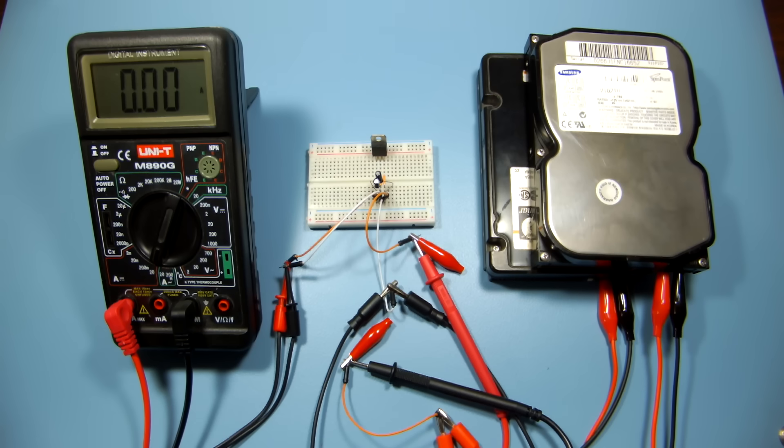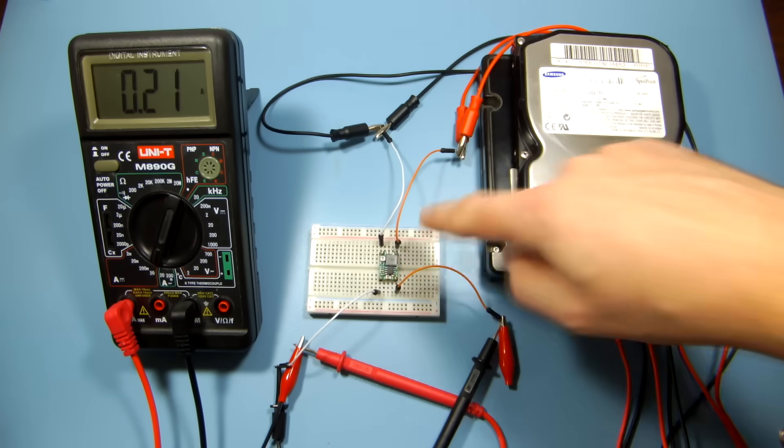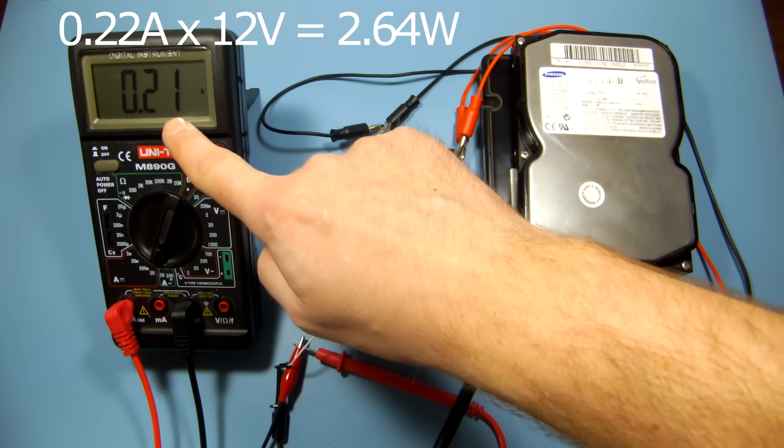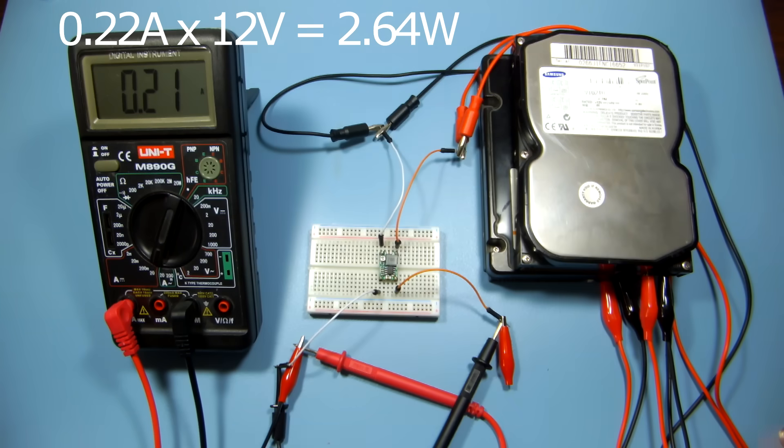Now let's check if the buck converter can finish the same test. After exactly 15 minutes, the buck converter draws only 220mA at 12V which is only 2.64W.